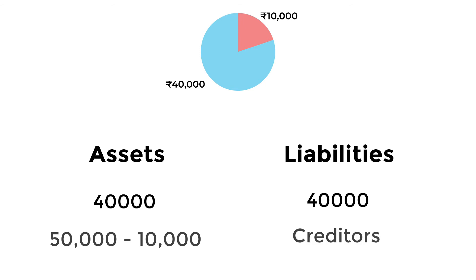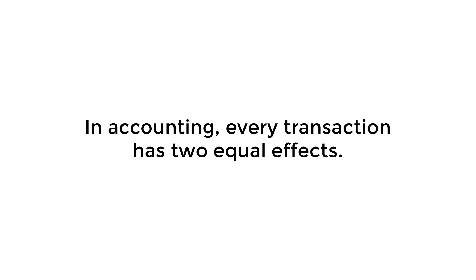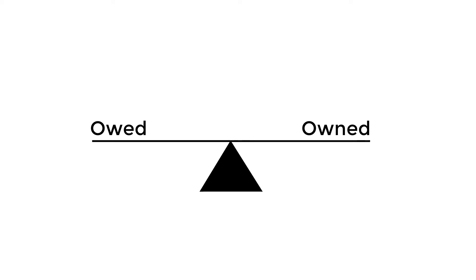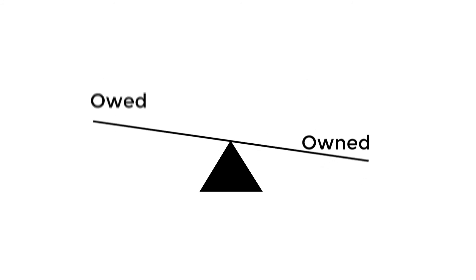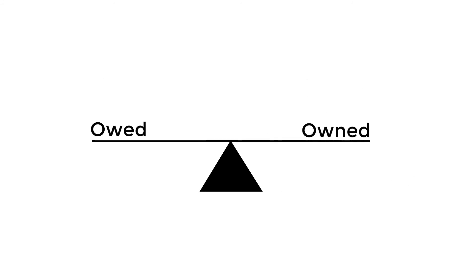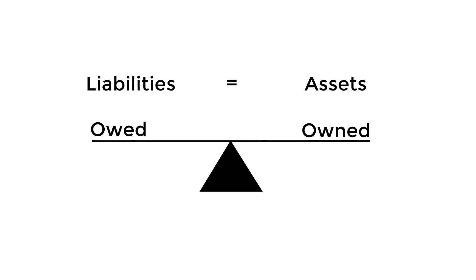This means that in accounting, every transaction has two equal effects. In simpler terms, the duality concept states that the amount owed and the assets owned are always equal, hence always maintaining the equality in the books of accounts. And that's the dual concept.